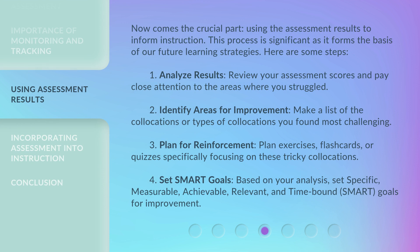Now comes the crucial part: using the assessment results to inform instruction. This process is significant as it forms the basis of our future learning strategies. Here are some steps. First, analyze results — review your assessment scores and pay close attention to the areas where you struggled. Second, identify areas for improvement — make a list of the collocations or types of collocations you found most challenging. Third, plan for reinforcement — plan exercises, flashcards, or quizzes specifically focusing on these tricky collocations.